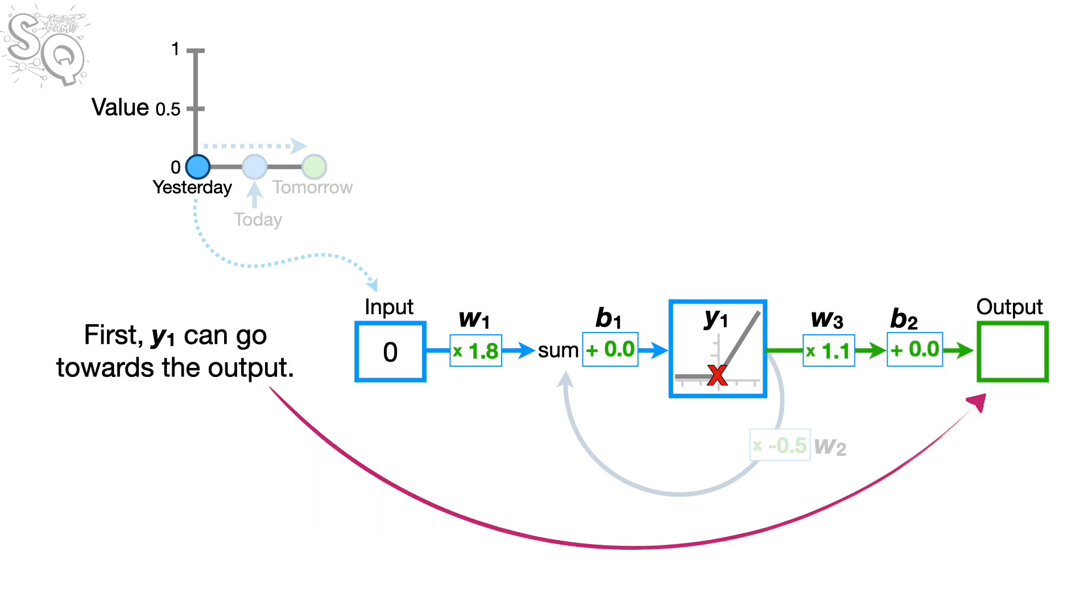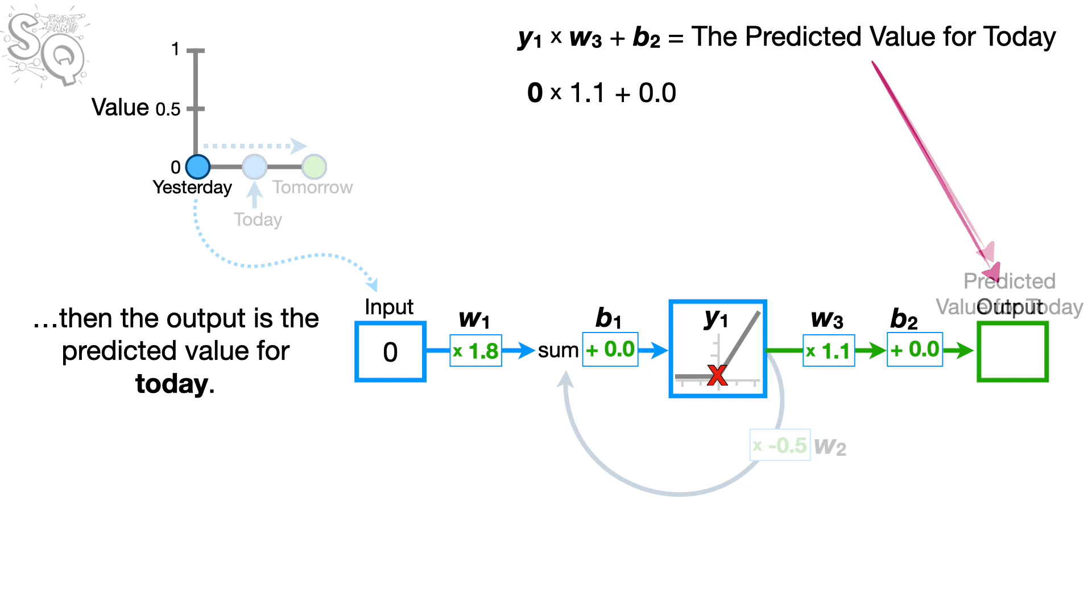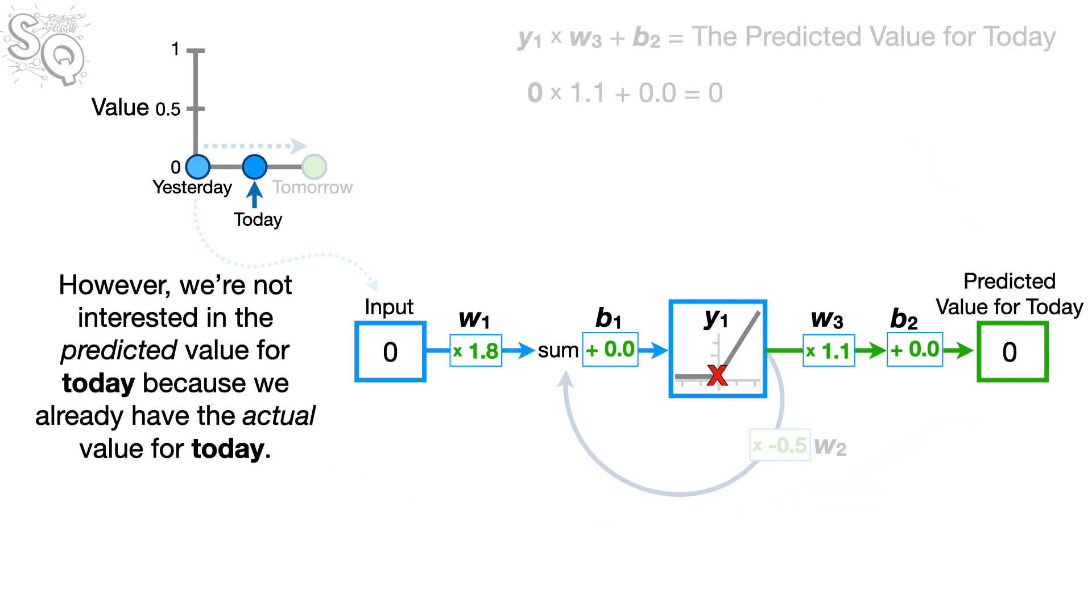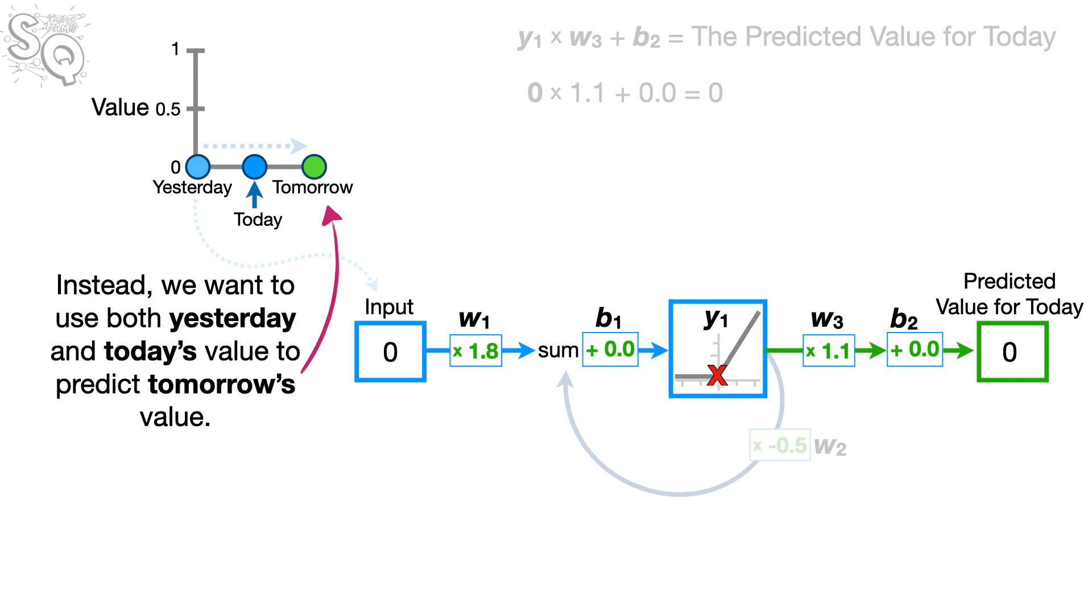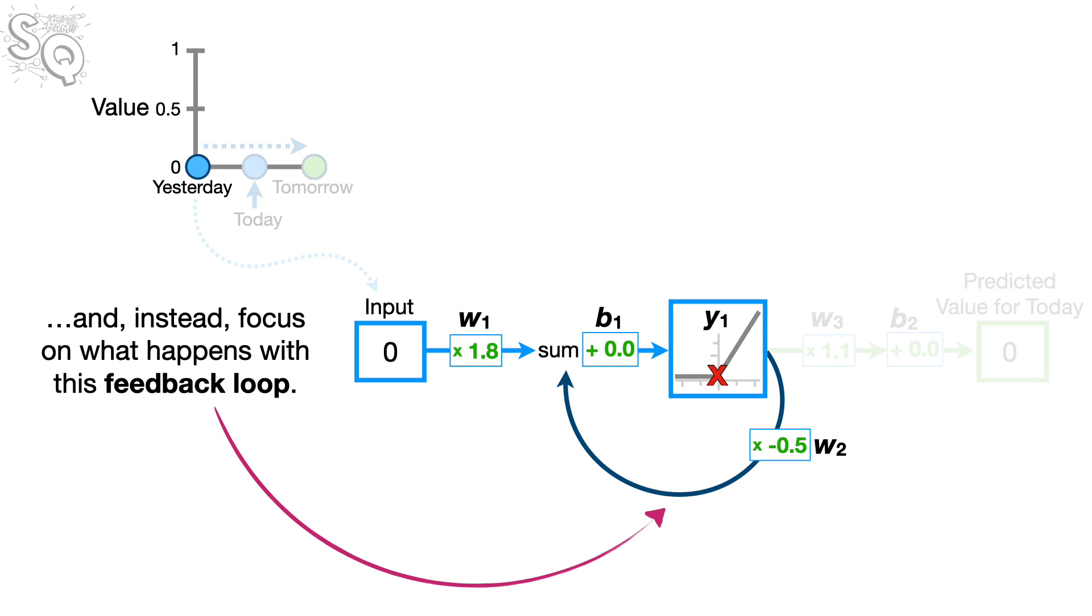We'll start by plugging yesterday's value into the input. Now we can do the math just like we would for any other neural network. At this point, the output from the activation function, the y-axis coordinate that we'll call y sub 1, can go two places. First, y sub 1 can go towards the output. And if we go that way and do the math, beep-boop-boop-boop, then the output is the predicted value for today. However, we're not interested in the predicted value for today because we already have the actual value for today. Instead, we want to use both yesterday and today's value to predict tomorrow's value. So, for now, we'll ignore this output and instead, focus on what happens with this feedback loop.